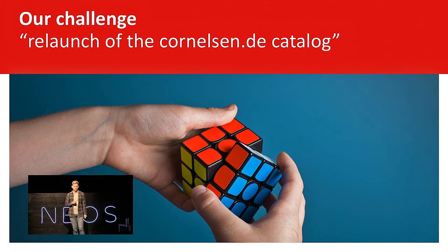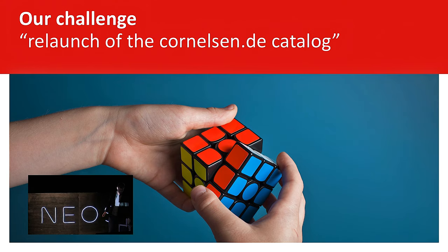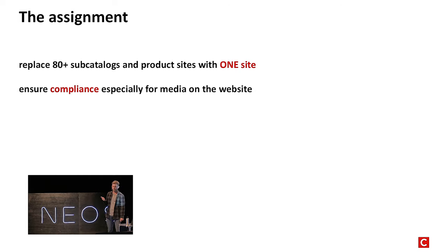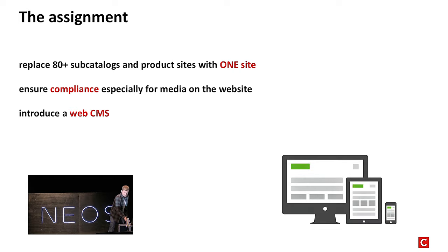What is our challenge? The challenge was to relaunch the Cornelsen.de catalog — it is the main function of our website, listing products and showing some marketing pages. Our assignment had three main topics: first, replace 80 or more existing product and marketing sites with just one site. Second, ensure compliance on all those sites, especially for used media. Third, introduce a new web CMS. At the time our stakeholders were very sure about one point: we don't need any responsive layout.